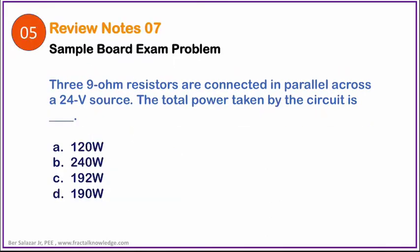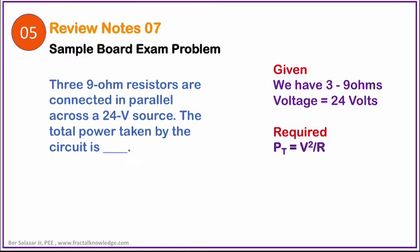Our fifth problem is a parallel circuit, but we need to find the total power taken by the circuit. It reads like this: three 9-ohm resistors are connected in parallel across a 24-volt source. The total power taken by the circuit is blank. Okay, investigating the problem gives a fast strategy to solve. Total parallel resistance of three 9-ohm resistors is just equal to 9 divided by 3, which is 3 ohms, like applying the latest formula we learned a while ago, and the power formula of V squared over R.